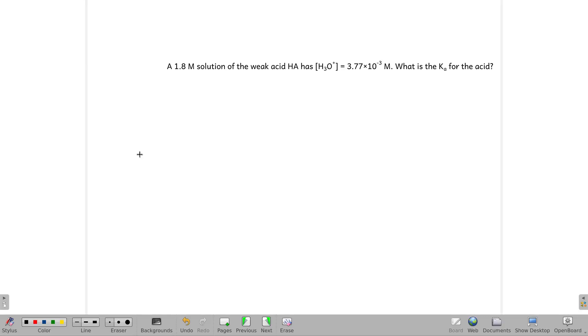A 1.8 molar solution of a weak acid, HA, has an H3O concentration equal to 3.7 times 10 to the negative third. We're going to use that information to get our Ka for this acid.